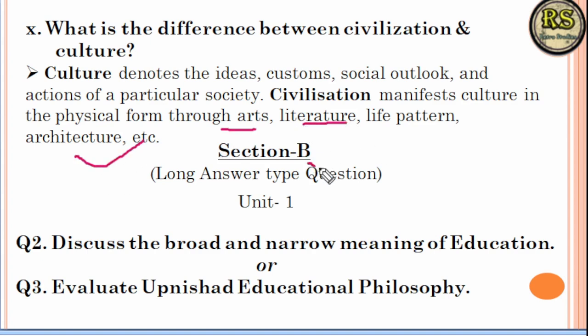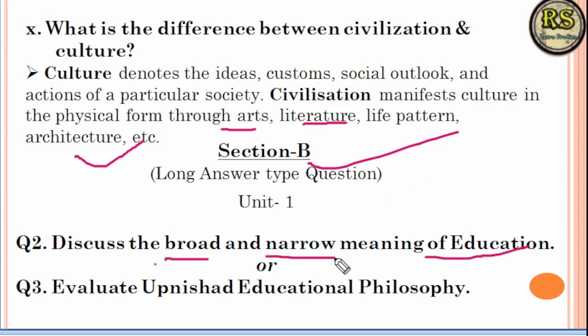Now Section B, which contains long answer type questions worth 5 marks each. Question number 2 asks to discuss the broad and narrow meaning of education. Question number 3 asks to evaluate educational philosophy. You can choose the option you prefer.